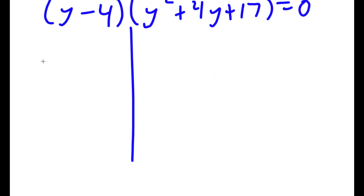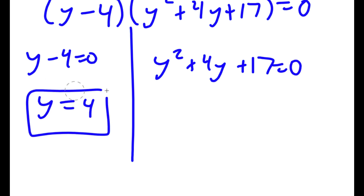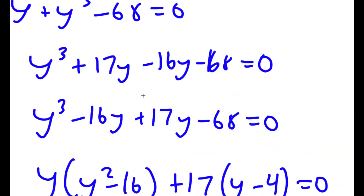This gives me two equations: y minus 4 equals 0, and y squared plus 4y plus 17 equals 0. From the first, y equals 4. For the second, using the quadratic formula gives the square root of a negative number, so there is no real solution. Therefore y equals 4 is my only solution.